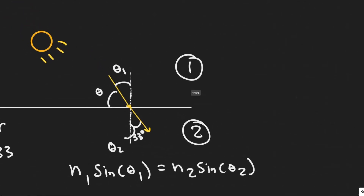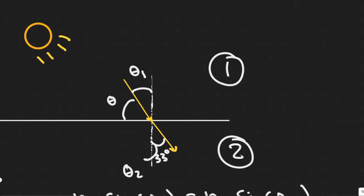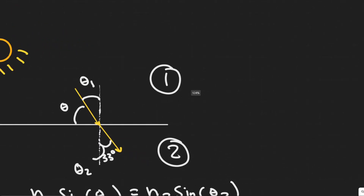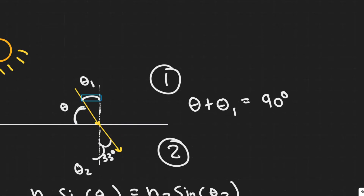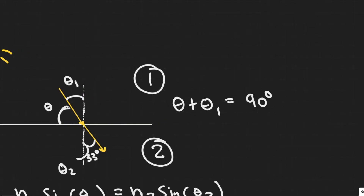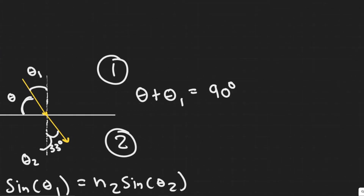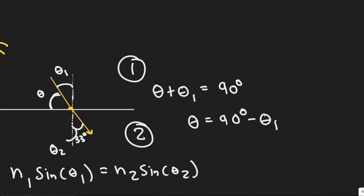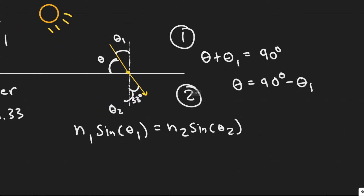What we're trying to find is theta. Notice that theta plus theta 1 is going to equal 90 degrees, because going from the horizontal to the normal is 90 degrees. So theta equals 90 minus theta 1. If I can find theta 1 using Snell's Law, I just take 90 minus that value to get the angle to the horizontal.